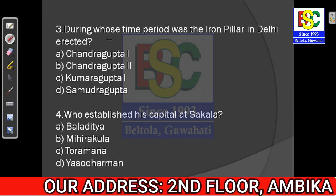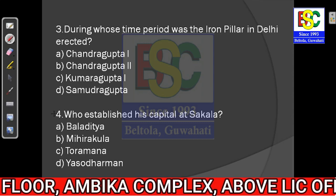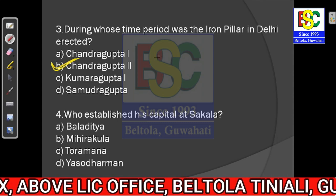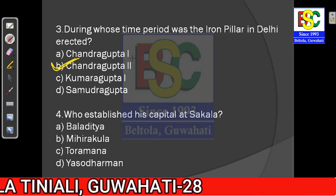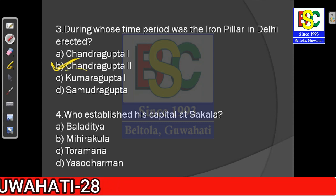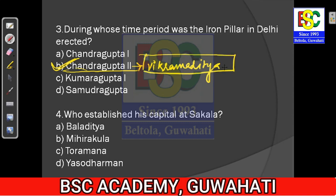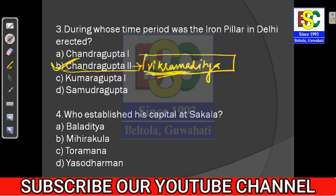Question number three: During whose time period was the Iron Pillar in Delhi erected? The answer is option B — Chandragupta II. He was the successor and son of Samudragupta. An important fact about him is that he adopted the title of Vikramaditya. This was a very famous title — about 14 to 15 kings adopted it in history, but the most famous among them was Chandragupta II. The answer is option B.